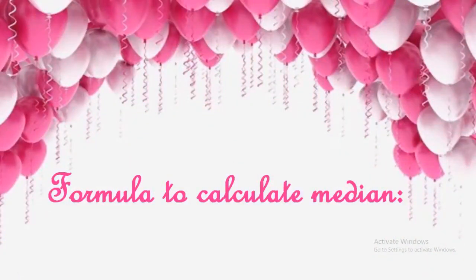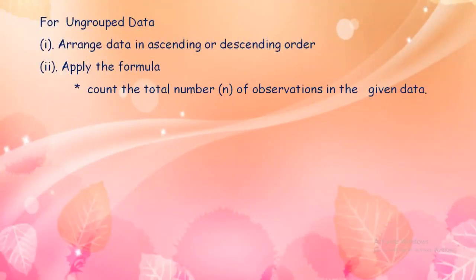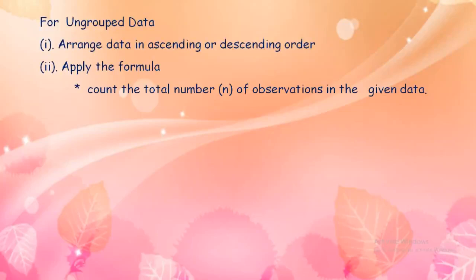Let's find the formula to calculate the median for an ungrouped data set. First, we have to arrange the data either in ascending or descending order, then simply apply the formula. To apply the formula, we count the total number of observations. The count may be either an even number or an odd number, and based on that, there will be two formulas.